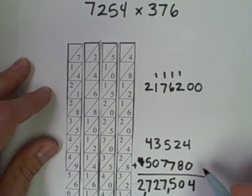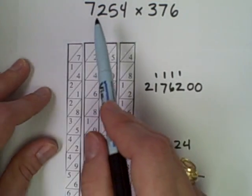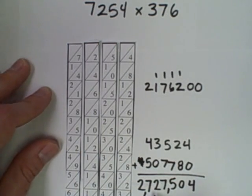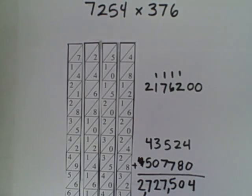So in total, this product, 7,254 times 376, is 2,727,504.